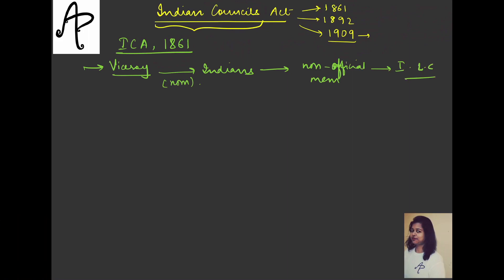It was more about the integration of Indians. The Viceroy was Lord Canning, so in 1862, Lord Canning actually nominated three Indians to the Legislative Council. Who were the three Indians? You need to remember them. Raja of Benares, Maharaja of Patiala, and Sir Dankar Rao. Three names you will remember.